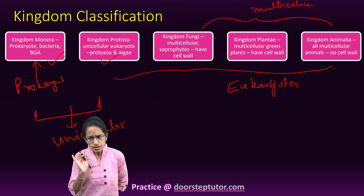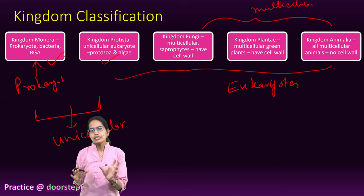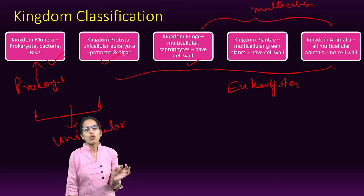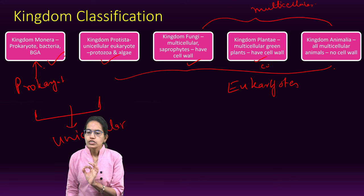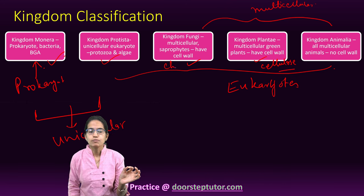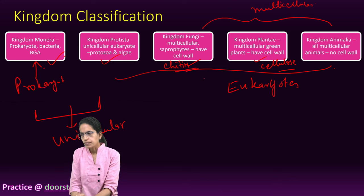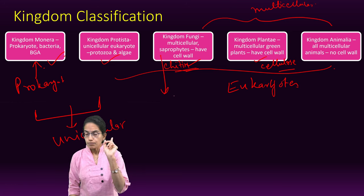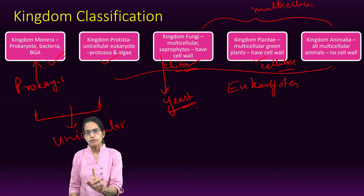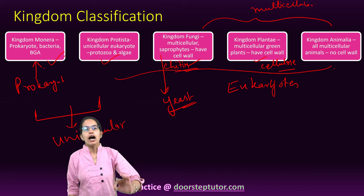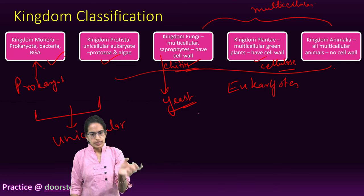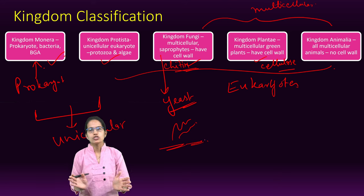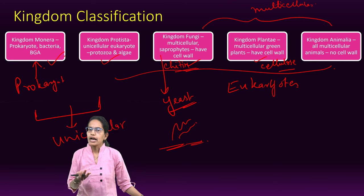Fungi is a non-green multicellular organism which is saprophytic and has a cell wall. A very important difference: the cell wall of plants is made of cellulose, however the cell wall of fungi is made of chitin. All fungi are saprophytes and multicellular except yeast, which is unicellular. They have a cell wall made of chitin and threads called hyphae. The base which is united is called stolon. Common examples of fungi are yeast, Rhizopus and Mucor.